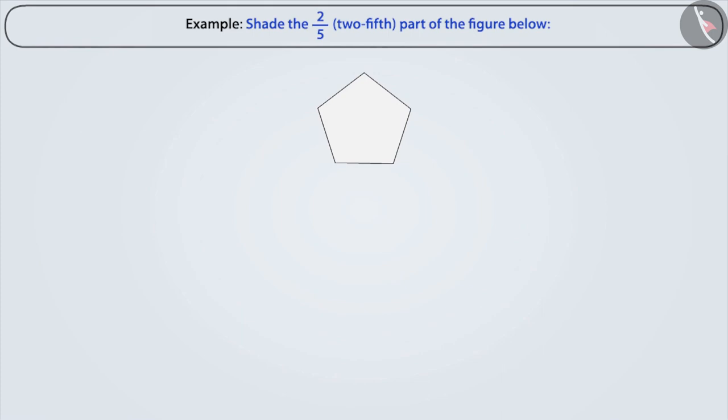In this example, we have to shade 2 fifth part. In the fraction 2 by 5, the denominator is 5. It represents that the given thing should be divided into 5 equal parts.